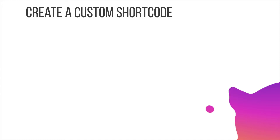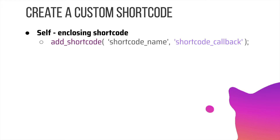Now that we know there are default shortcodes and two separate types of shortcodes, let's talk about how to create a custom one. For a self-closing shortcode, all you have to do is call the WordPress function add_shortcode. It takes two parameters: the first is the shortcode name — a custom name you can give — and the second is the callback function name, which you need to create and provide here.